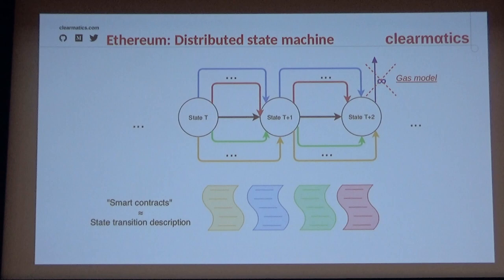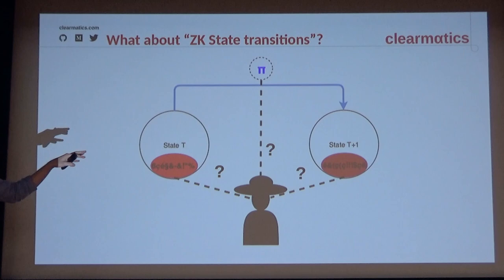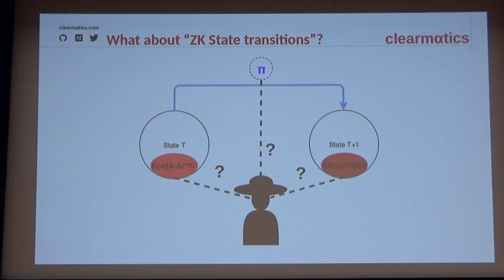Everyone here knows about Ethereum, and the platform is amazing — we have the EVM, which is a very elegant execution environment. But the thing is, it's pretty bad for privacy. So we thought: can we leverage this execution environment to actually do zero-knowledge state transitions? The idea is we have an encrypted state, and we'd like to prove in zero-knowledge that we end up in another encrypted state without creating value — no double-spending, no creating money out of thin air. This is going to be our goal throughout this talk.